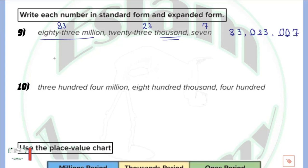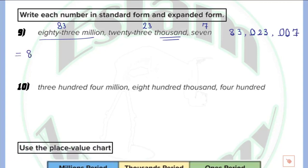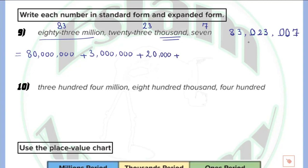Now we write the same number in expanded form. 8 has 7 digits to its right, so it contributes 80,000,000. Plus 3 with 6 digits to its right, giving 3,000,000. Plus 2 with 4 digits to its right, giving 20,000. Plus 3 with 3 digits to its right, giving 3,000. Plus 7. That is how we write the number in standard form and expanded form.